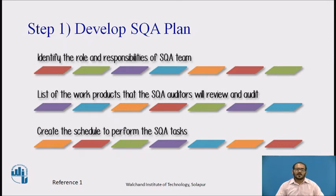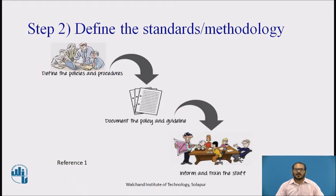In the software quality assurance plan, the test manager should do the following: identify the roles and responsibilities of the software quality assurance team; list the work products that a software quality assurance auditor will review and audit; and create a schedule to perform the software quality assurance tasks. The next step is to define the standards or methodologies. To review the management activities against the standard process, define the policies and procedures intended to prevent defects from occurring in the management process, document the policies and procedures, and inform and train staff to use them.